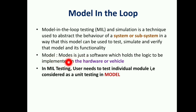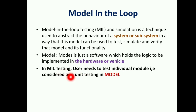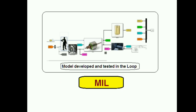We are not dealing with model development itself, so coming to the Model in the Loop testing: in MIL testing, the user needs to test each individual module — that is considered unit testing in the model. Once the model has been developed, the tester or unit tester (that is, the developer) has to test each individual module to verify whether it is working as expected or behaving as expected. In MIL testing, the model will be tested at the unit level.